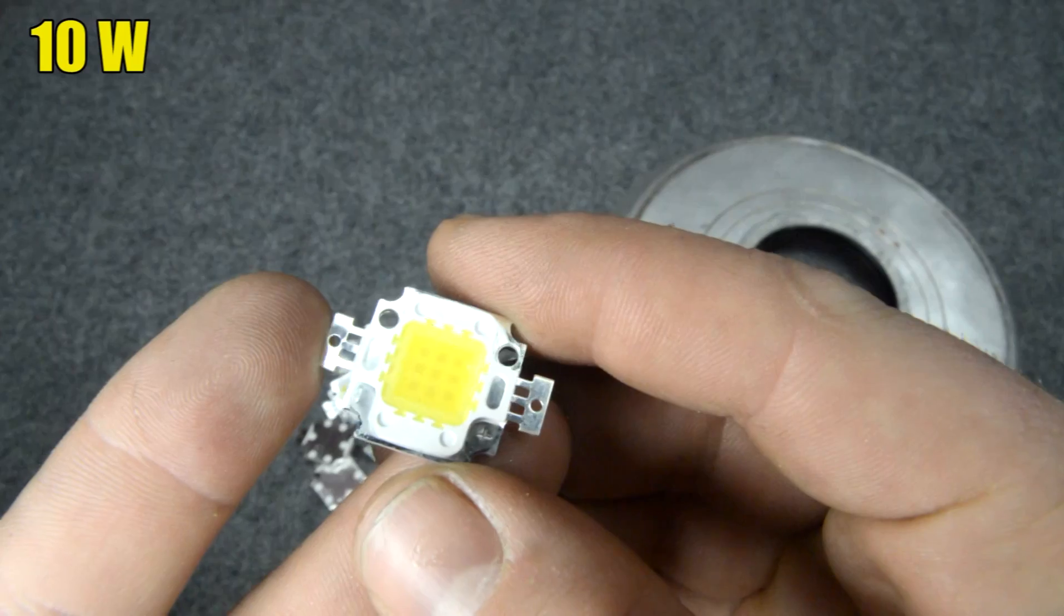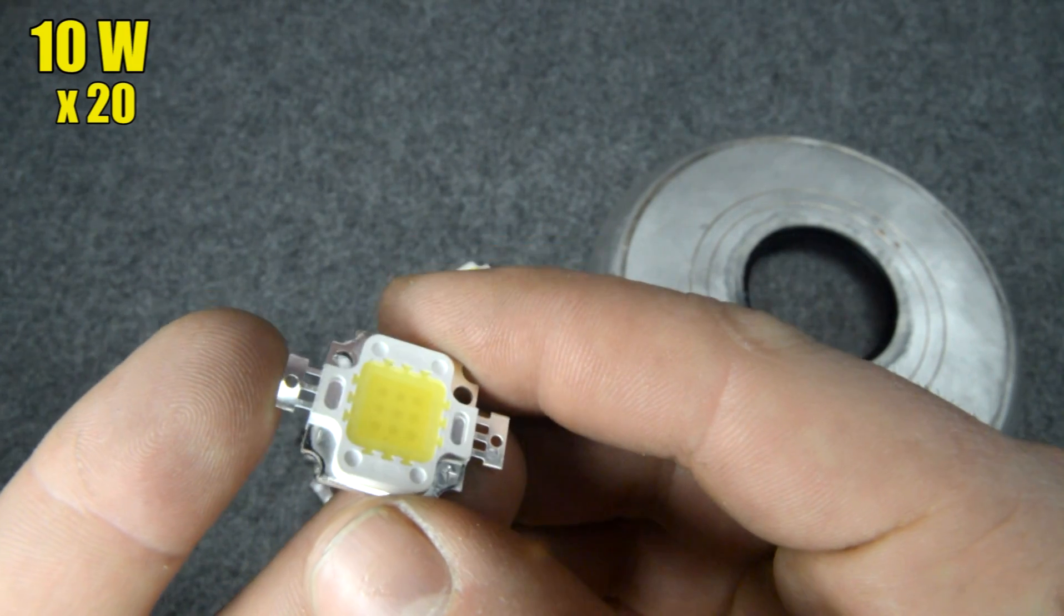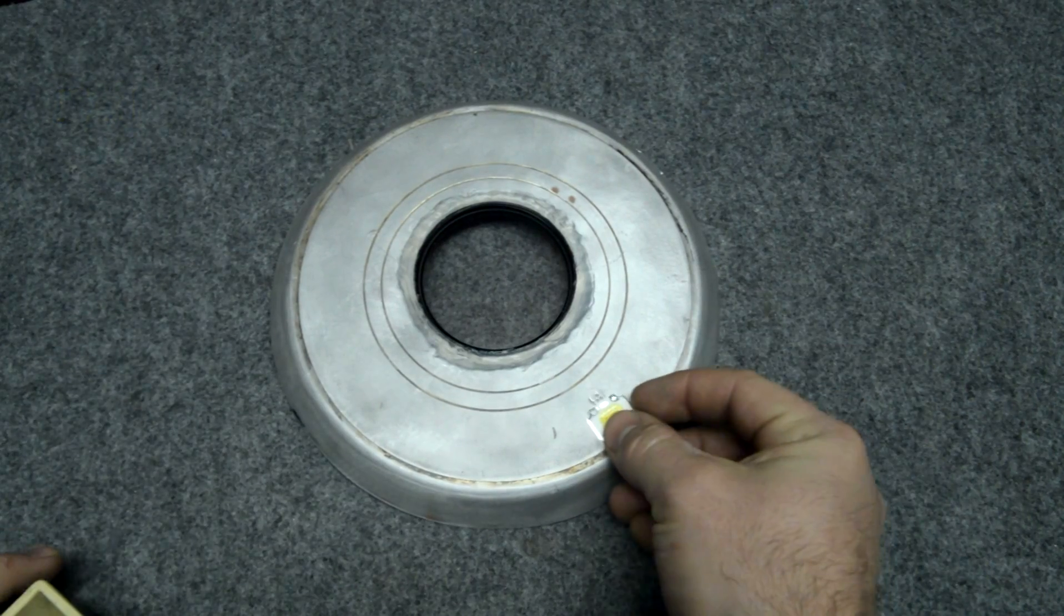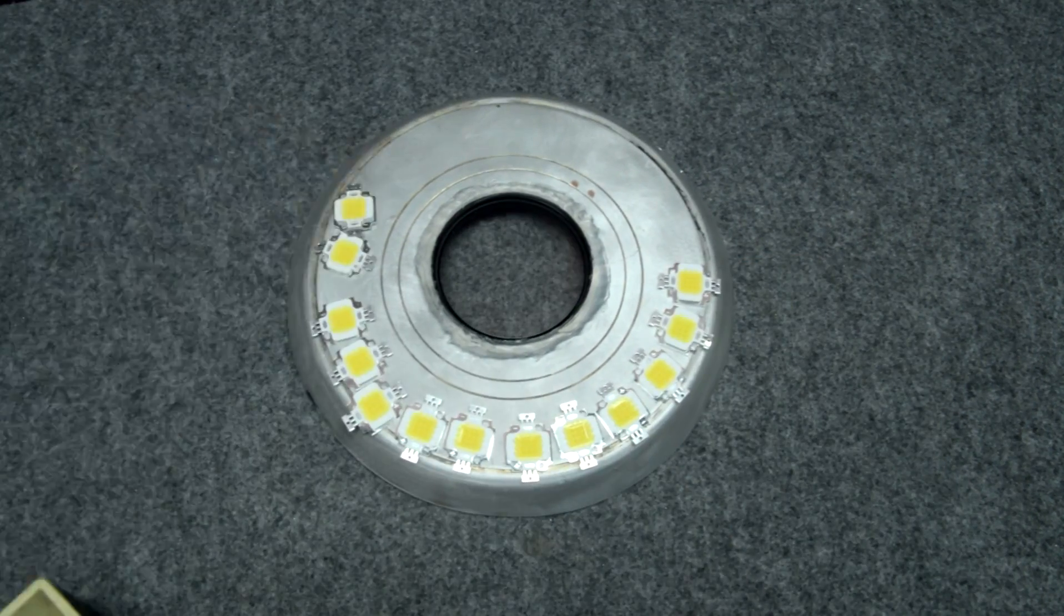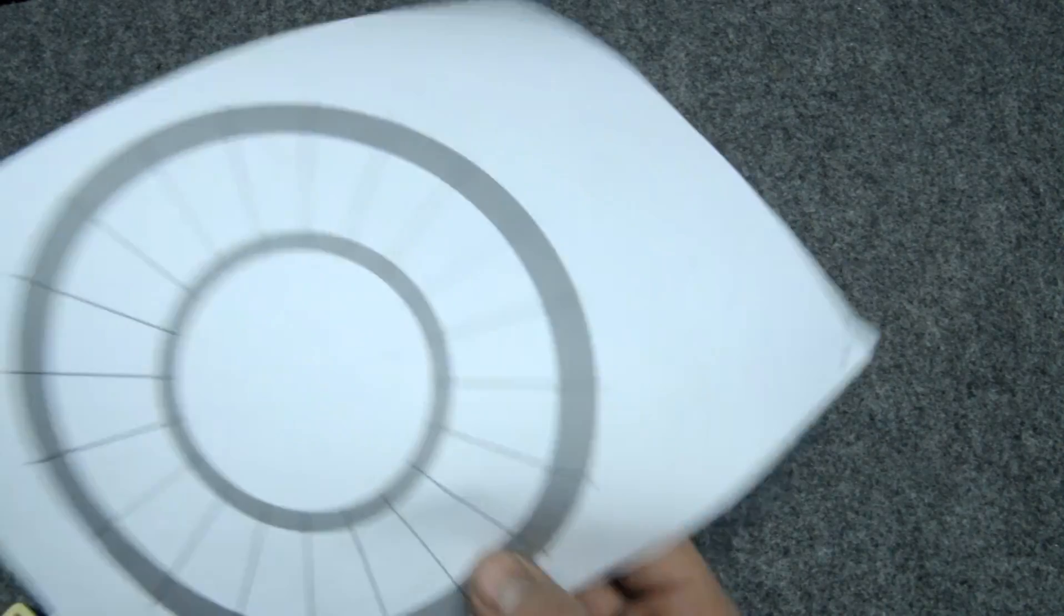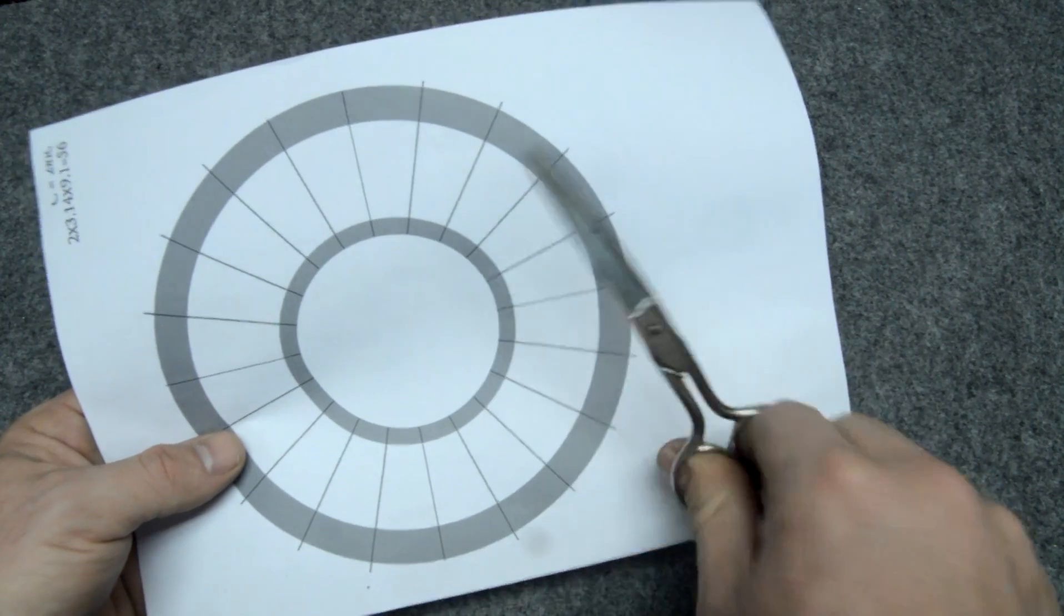I bought on eBay these 10 watt LEDs. I bought 20 of them, they are very cheap and you find the link below on eBay to buy them. I put them all around the pan but to do something much more precise I decide to print this PDF you find it also in the link description.